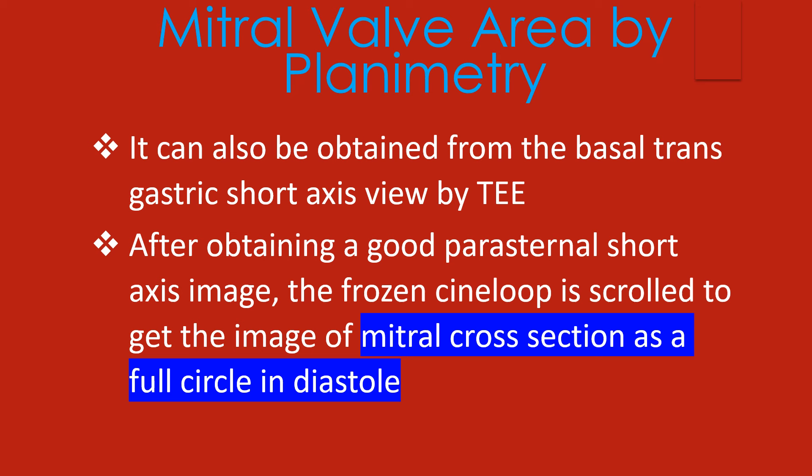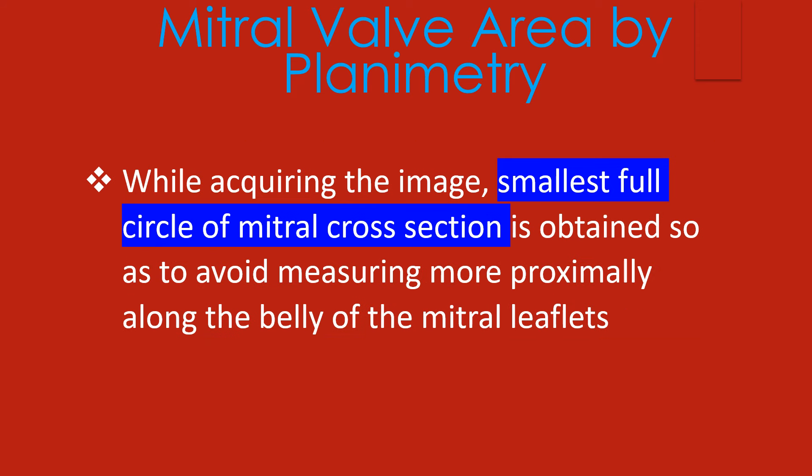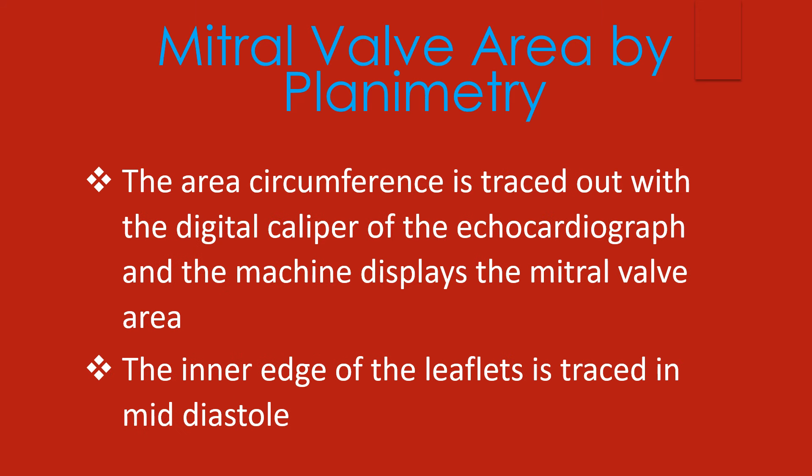After obtaining a good parasternal short axis image, the frozen cine loop is scrolled to get the image of the mitral cross section as a full circle in diastole. The smallest full circle of the mitral cross section is obtained to avoid measuring more proximally along the belly of the mitral leaflets. The area circumference is traced out with the digital caliper of the echocardiograph and the machine displays the mitral valve area.